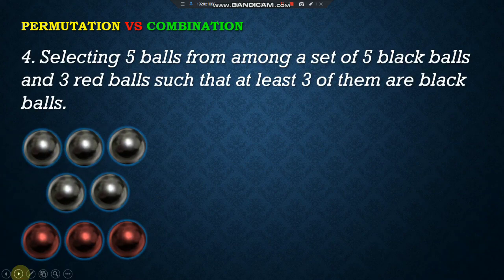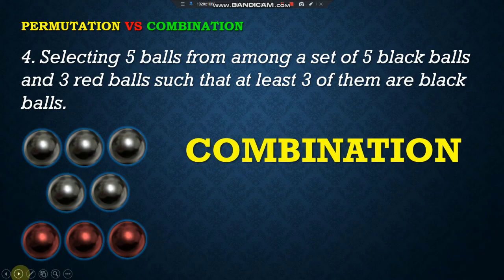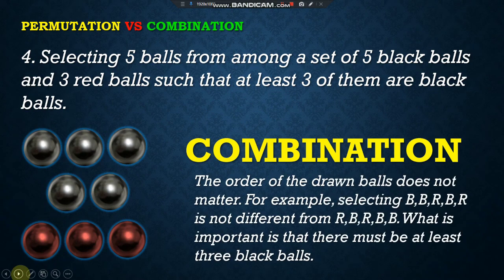Selecting five balls from among a set of five black balls and three red balls such that at least three of them are black balls. It is a combination because the order of the chosen balls does not matter. For example, selecting black, black, red, black, red is not different from red, black, red, black, black. What is important is that there must be at least three black balls. Did you get everything right?